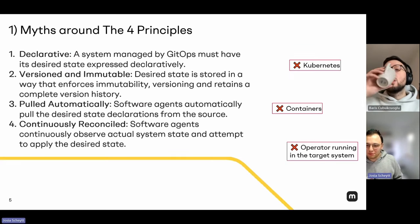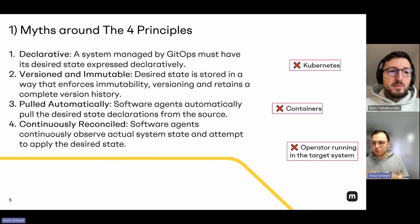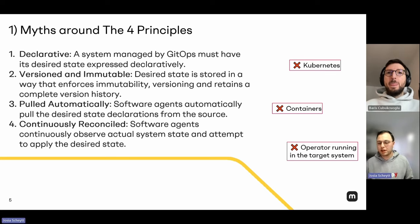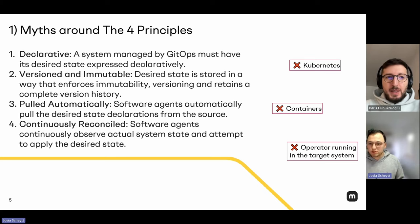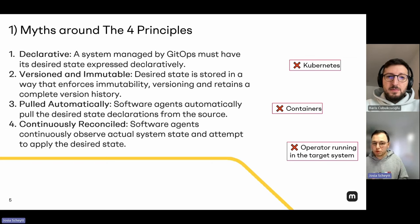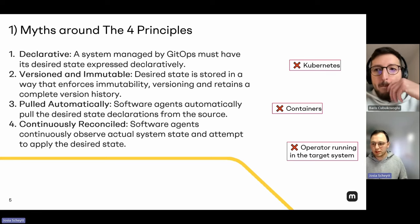Let's look at the four GitOps principles. We're not going to repeat them verbatim — you'll probably hear them a lot throughout the day. But let's focus on one thing: nothing here mentions Kubernetes, and nothing here explicitly mentions containers either. Whenever you have a declarative format for expressing it, you could even be running WASM or JAR files with GitOps. Also, the principles never require you to run the GitOps operator in the target system — you could have a GitOps operator running as part of a scheduled CI pipeline.